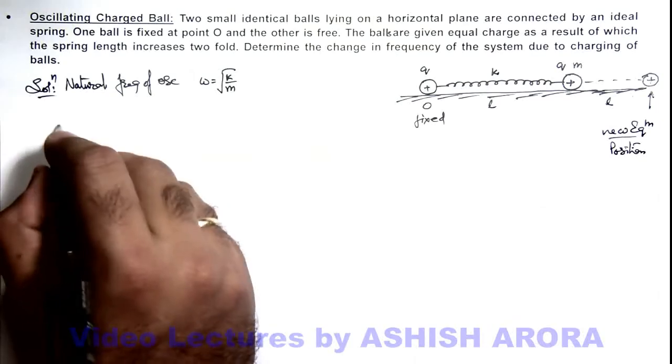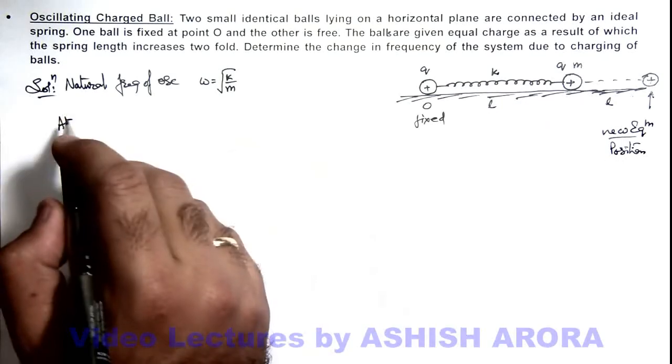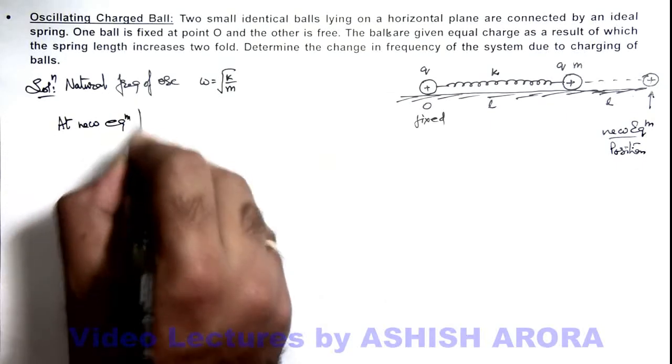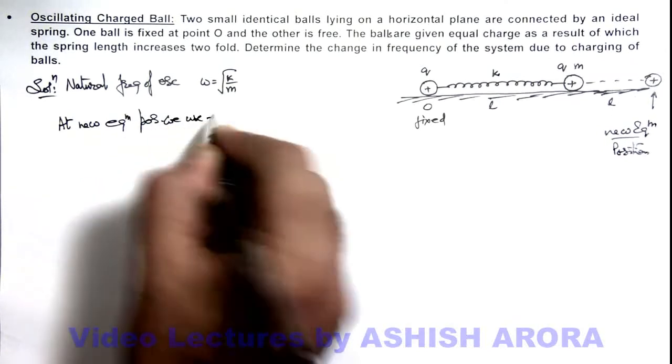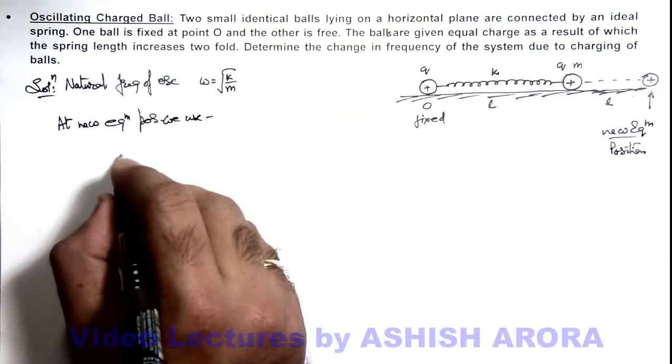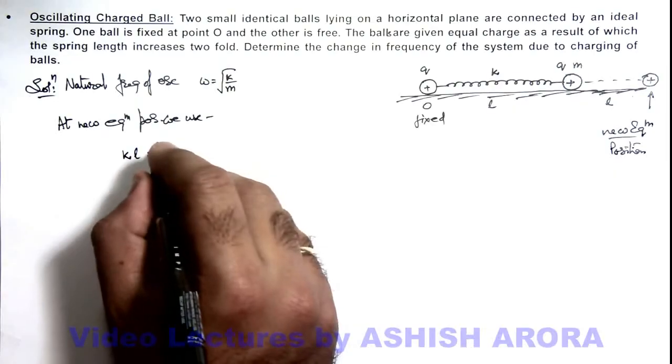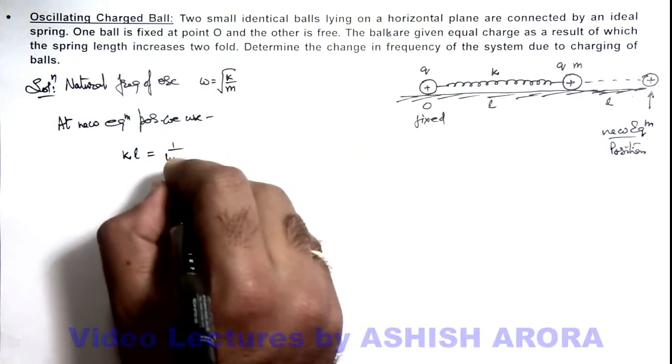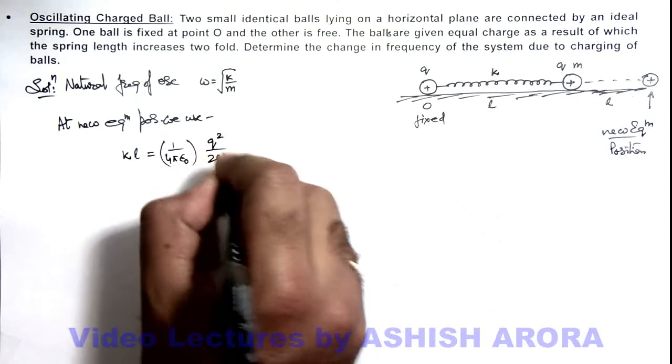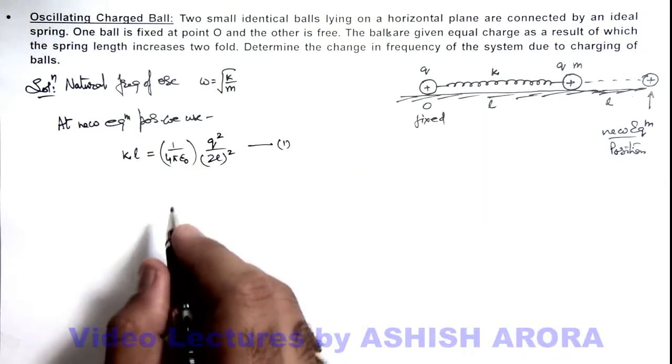For this new equilibrium position we can balance the forces to get a relation among the parameters. So we can write at new equilibrium position, the spring force on spring will be kl. And the repulsive force between the two charges will be 1 by 4π epsilon_0 q squared by 2l whole squared. So this is equation 1 we are getting for equilibrium position.